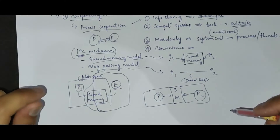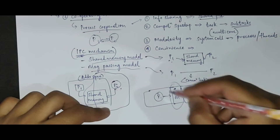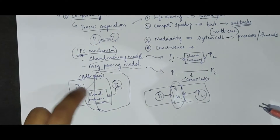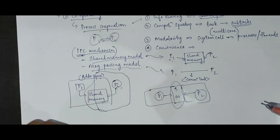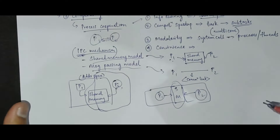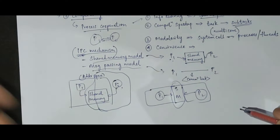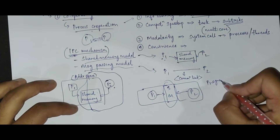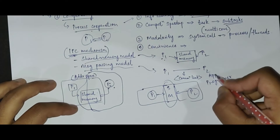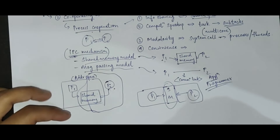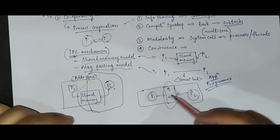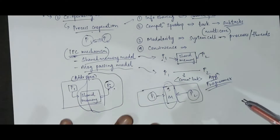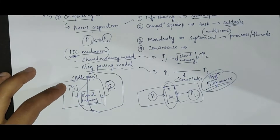The operating system is not involved in creating this shared memory — it is the processes themselves that handle all of this. The process should handle the creation of shared memory, the form of the data, where the data will be written, and where it will be read from. All of this has to be handled by the application programmer, not the OS.